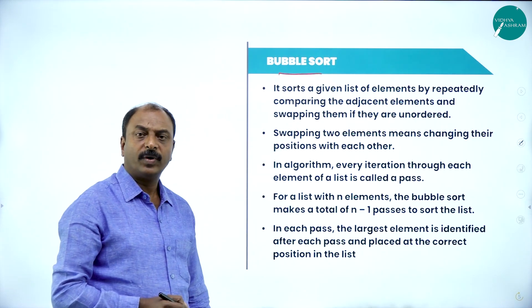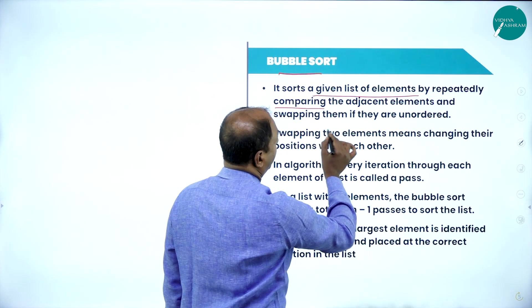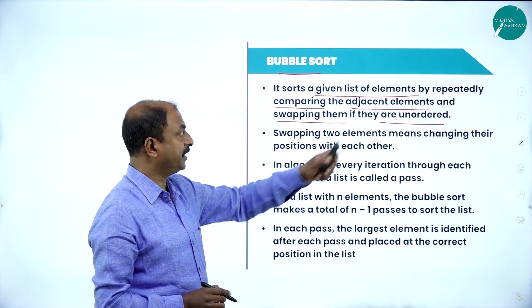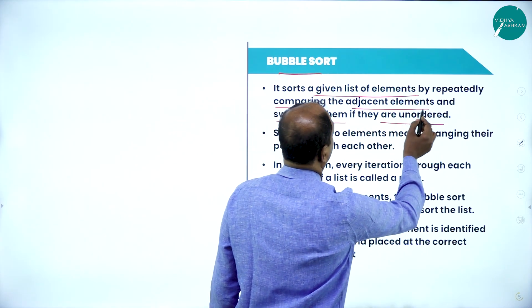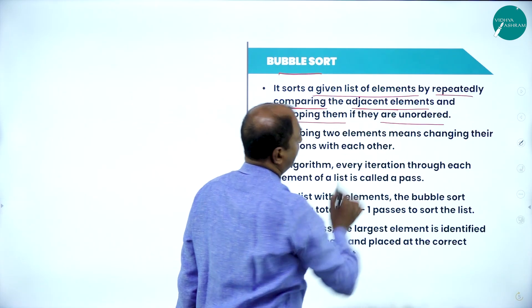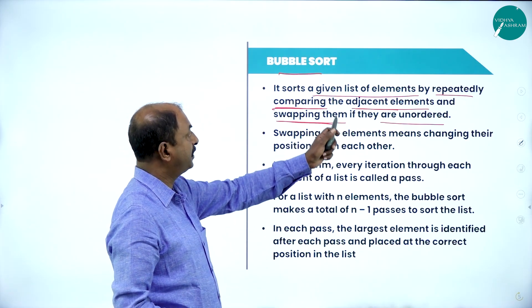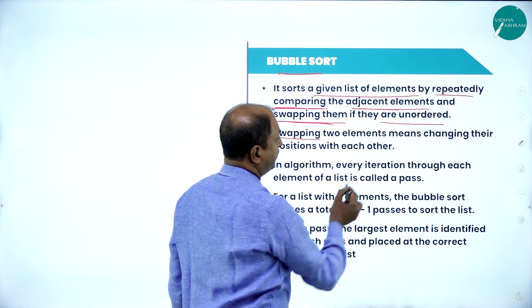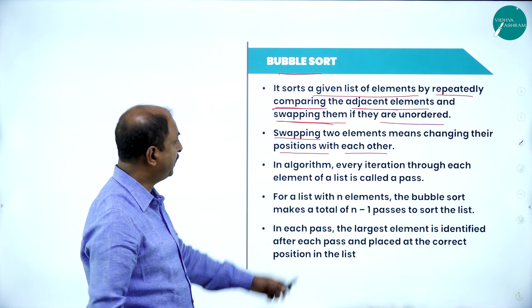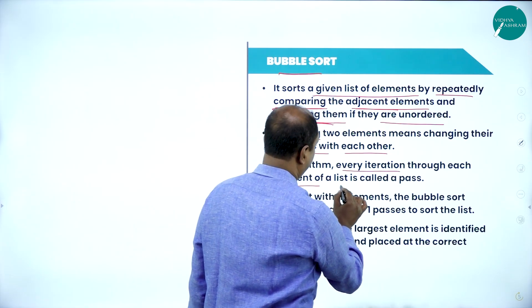Let us start with the first one, bubble sort. Bubble sort sorts a given list of elements by repeatedly comparing the adjacent elements and swapping them if they are in unordered position. The technique here is we are going to repeatedly compare the adjacent elements and swap them if they are not in the right place. Swapping of two elements means changing their position with each other — interchange of two numbers or interchange of elements in a given list.